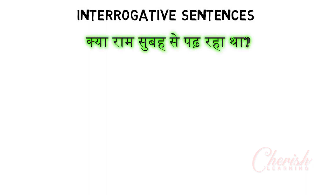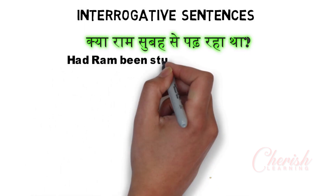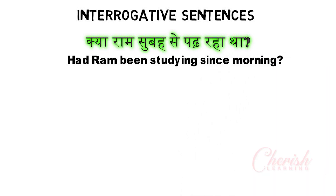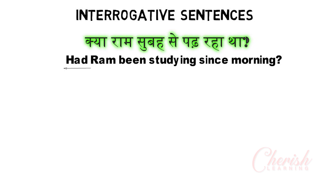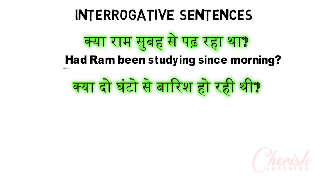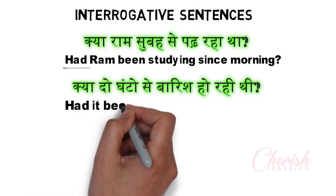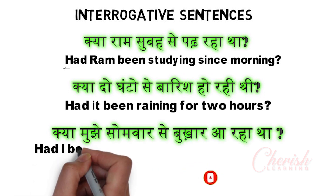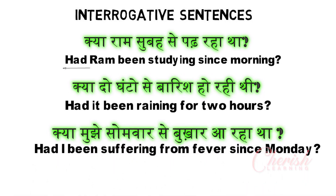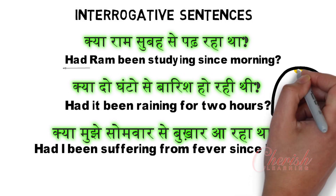Now quickly we will do interrogative sentences. Where is the helping verb? It comes first. So: 'Did Ram was studying in the morning?' becomes 'Had Ram been studying since morning?' — question mark at the end. 'Had' comes before the subject. Very simple. Next: 'Had it been raining for 2 hours?' Next: 'Had I been suffering from fever since Monday?' Done. Very simple, right? It's very easy — past perfect continuous tense. They are really very easy.